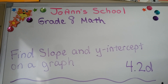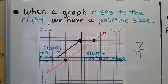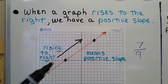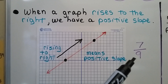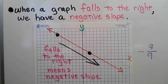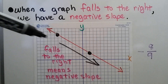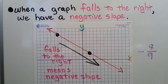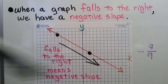Grade 8 math, number 4.2d: finding slope and y-intercept on a graph. When a graph rises to the right, we're going to have a positive slope — it's going to be a positive number. When a graph falls to the right, we have a negative slope — our slope will be a negative number.